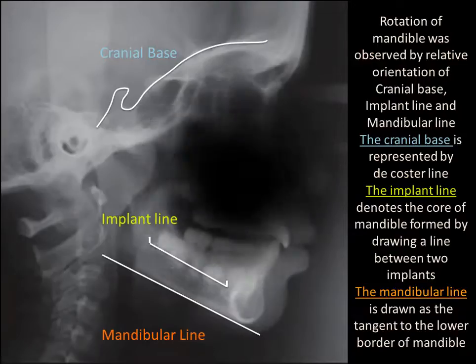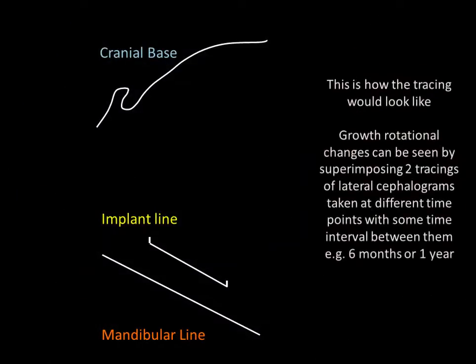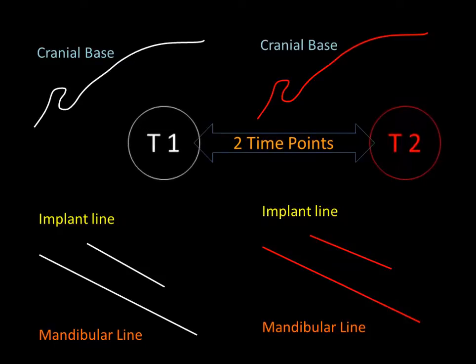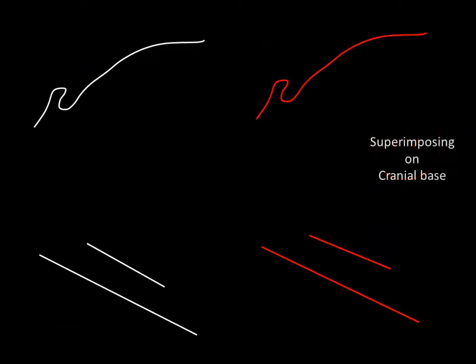This is how the tracing would look like. Growth rotational changes can be seen by superimposing two tracings of lateral cephalograms taken at different time points, with some interval between them — say, for example, six months or one year. These are two tracings taken at two time points: T1 with white tracing and T2 with red tracing. Now superimposing on cranial base as reference.